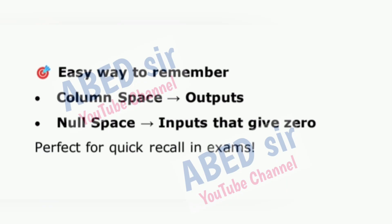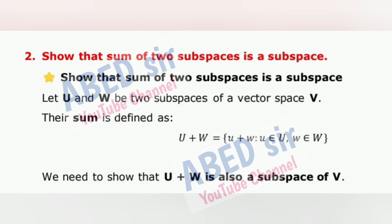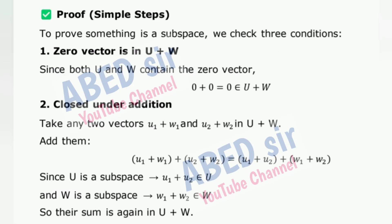Next Important Short Question: Is U + W a subspace? Since both U and W contain the zero vector, 0 + 0 = 0 is in U + W. Closed under addition: take any two vectors and add them. Since U is a subspace and W is a subspace, their sum is again in U + W.